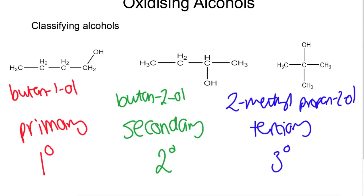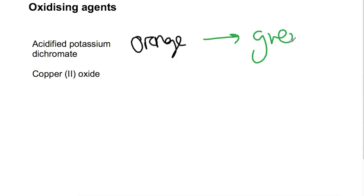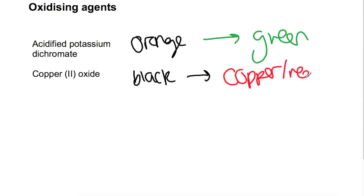We'll need to think about what things we can use to oxidise alcohols. So we're going to have a look at two oxidising agents. The first one is acidified potassium dichromate, which is orange. When you have a successful oxidation reaction, this will turn into a sort of a greeny blue colour. If you're using copper(II) oxide, which is black, a successful oxidation reaction will reduce the copper(II) oxide to copper metal, which will be a sort of red-brown colour.